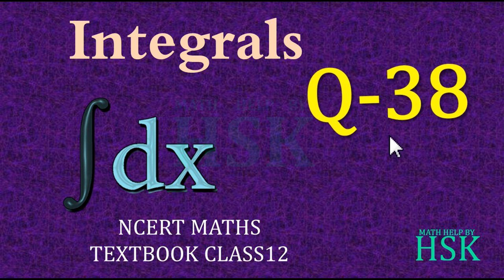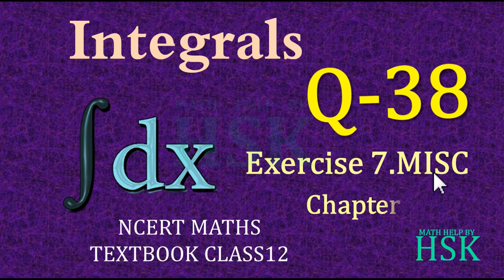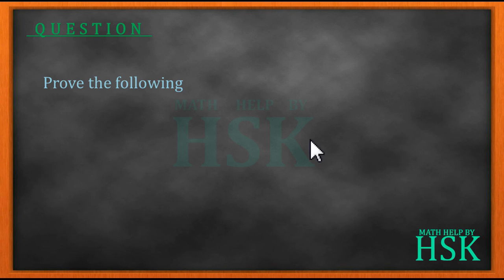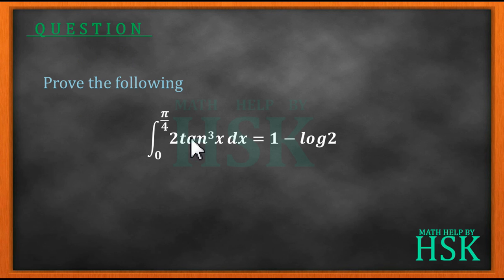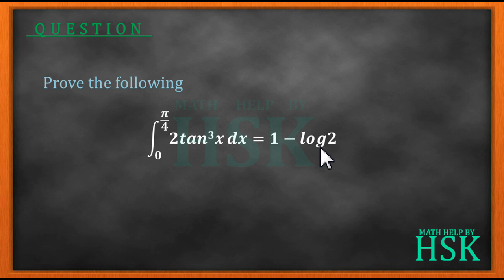Hello friends, in this video I'm going to take question number 38 of the miscellaneous exercise of chapter 7 of NCERT maths textbook class 12. The question is: we have to prove that the integration of 2tan³x dx from limits 0 to π/4 is equal to 1 minus log 2.